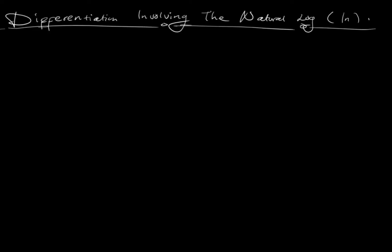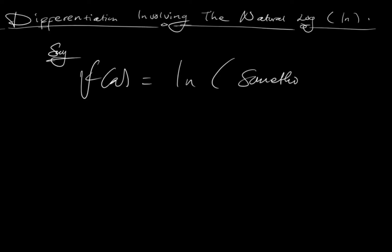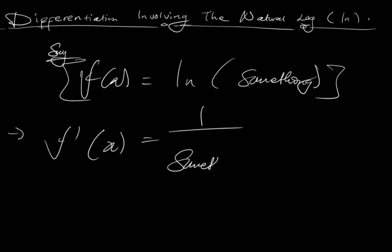Let's get to it. Remember, differentiation is all about finding the gradient at a particular point of a curve — it's like you're trying to find a slope. So for this type of differentiation, say you have a function f(x) equal to ln of something. The derivative of this function, which we call f'(x), will always be equivalent to 1 over something, times the derivative of something. Be mindful of this.